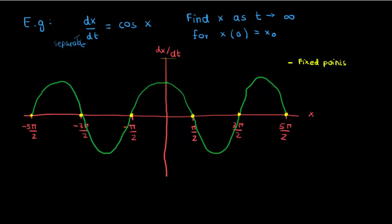But what if I'm not situated at a fixed point? What if my particle is somewhere between negative π/2 and π/2? What happens? Well, my derivative, or my rate of change of x, is positive in this region, which means that my x wants to increase. And where's the direction of increasing x? It's to the right. I could say the same thing about any other region where the derivative is positive. So here my x would want to move to the right, and so on.